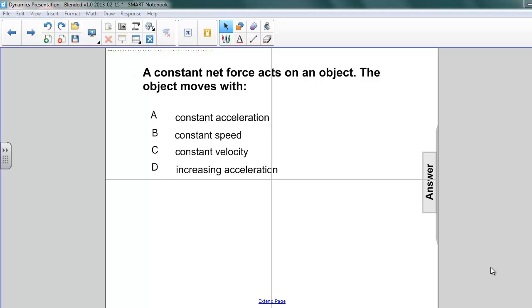Here's another question for you. A constant net force acts on an object. So the object moves with A, constant acceleration, B, constant speed, C, constant velocity, or D, increasing acceleration.